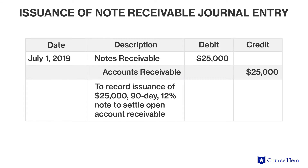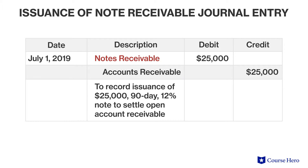Suppose that Schulte Company has had a $25,000 open account receivable balance for Labriola Limited since January 31st. On July 1st, Schulte requires Labriola to issue a $25,000, 90-day, 12% promissory note to settle the account. The note receivable is initially recorded on Schulte's books at its face amount. Although we know interest will eventually accrue, no interest has yet accrued when the note is first issued.